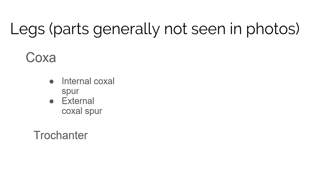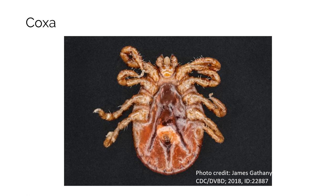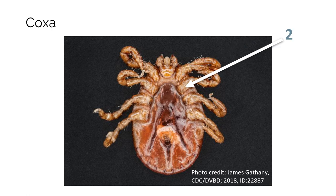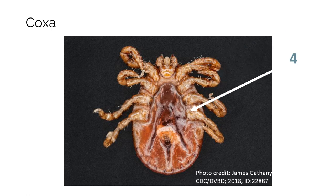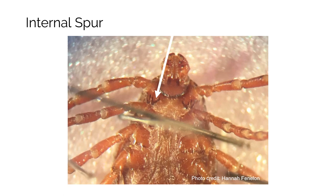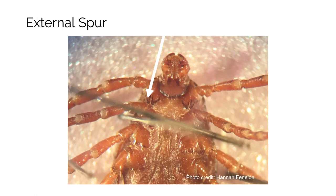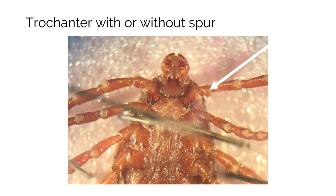The trochanter is the part of the leg that attaches to the coxa. The coxa are numbered starting closest to the head with one, two, three, four. When looking at the coxa, you should pay attention to the internal spur, which is closer to the midline, and an external spur, which is farther from the midline. Are these spurs present on one or all of the coxa? How long are the spurs, and are they sharp or blunt? On the trochanters, a spur may be present or absent depending on the species. Neither coxa nor trochanters will generally be used for photo submission identifications.